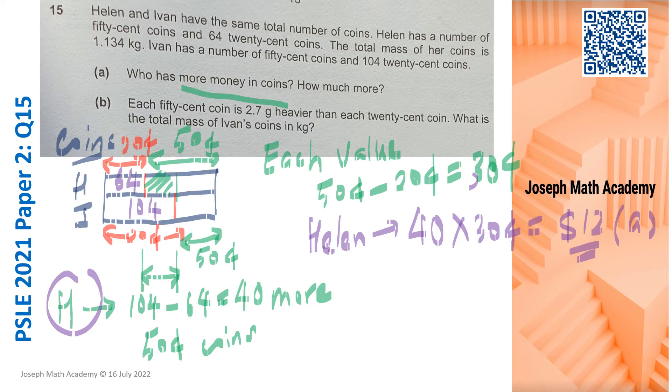To do part B, I am also going to use the same idea. I'm going to draw another model. Allow me to divide this part into two. I'm going to use a model. This time, the model is on the mass of the coins.